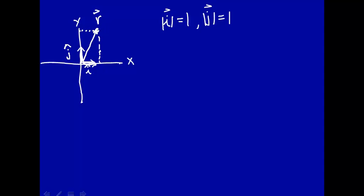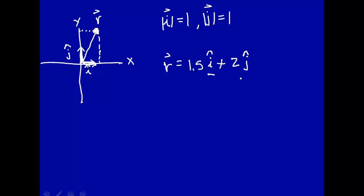Let's make this a vector r pointing up that way, and we can say r is a combination of 1.5 î plus 2 ĵ. So this vector r — you go 1.5 times this way, and then you point up here 2 times that way, and there it is. So i and j form a basis set; you can represent any vector in the two-dimensional plane as a linear combination of these basis set vectors î and ĵ. î and ĵ form a complete orthonormal set.